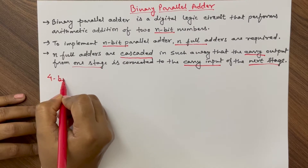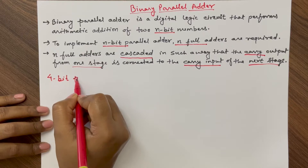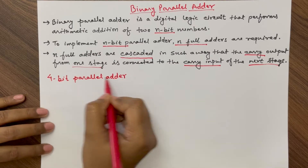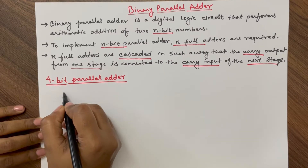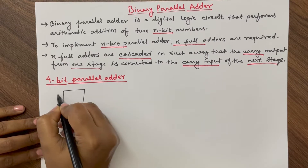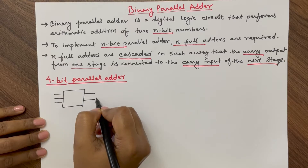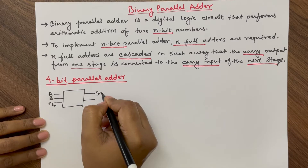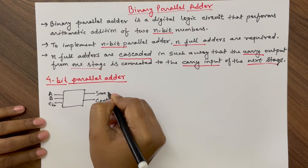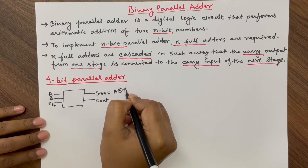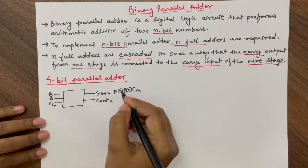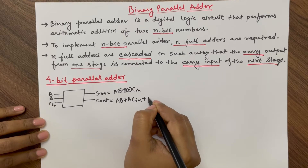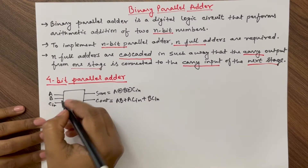For designing a four-bit parallel adder we require four full adders. For a full adder, if inputs are A, B and C-in, then the output will be sum and carry output. The sum will be A XOR B XOR C-in, and carry output will be AB + AC-in + BC-in. This is the full adder.